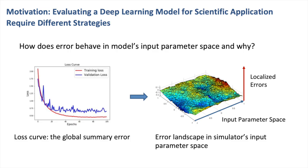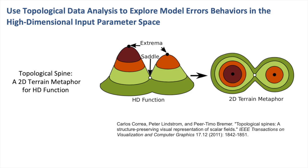The challenge lies in the potential high-dimensionality of the input-parameter space. In this work, we utilize topological data analysis to identify the peaks of error defined in such a space and communicate extracted information using topological spine that employs a terrain metaphor.